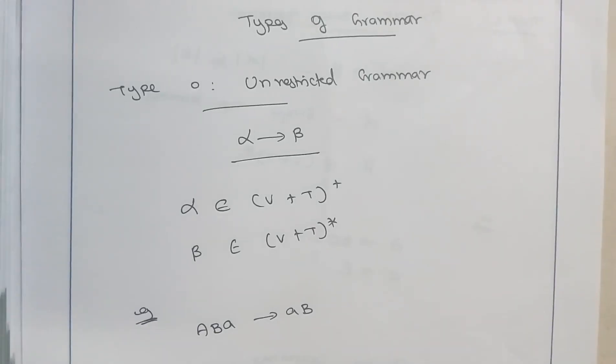Hello everyone. In this session we are going to discuss about the different types of grammar available. There are actually 4 types of grammar available, that is type 0, type 1, type 2 and type 3.